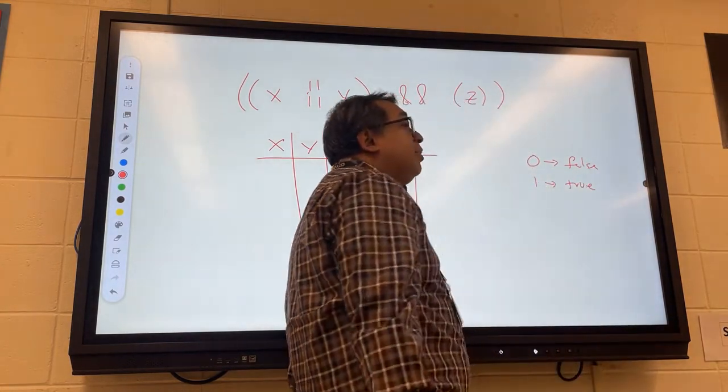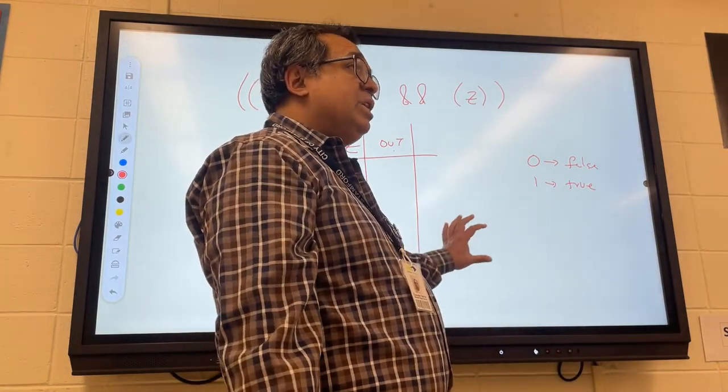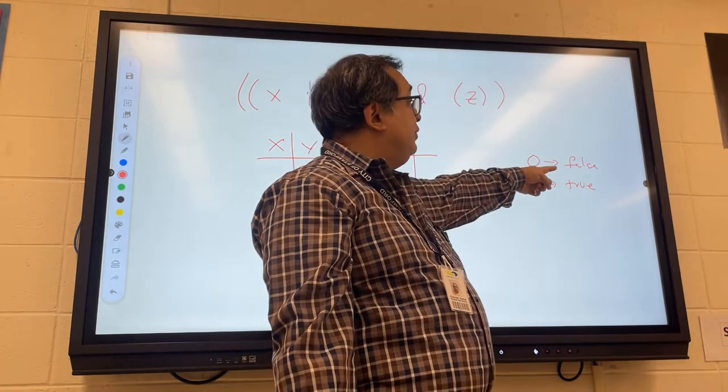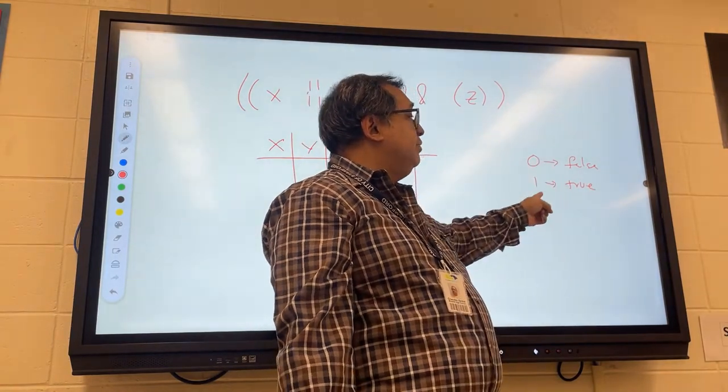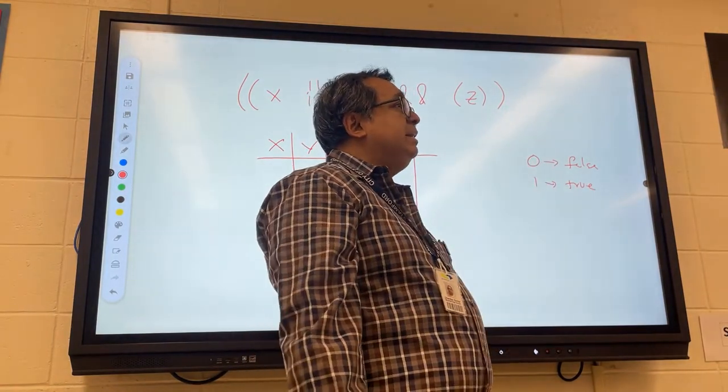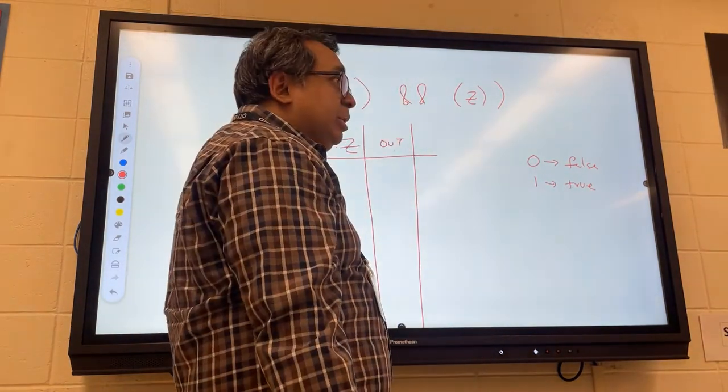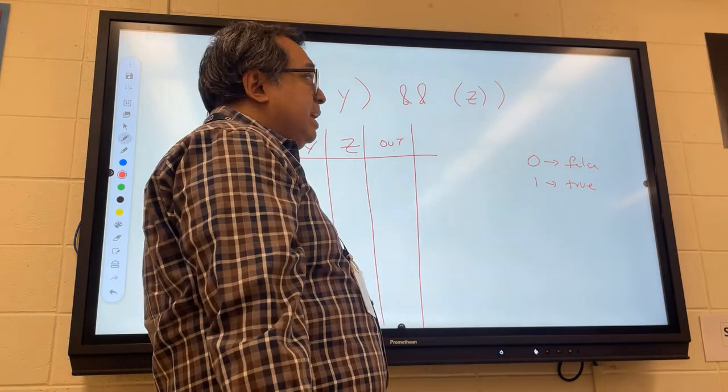So we'll just assume here that zero means false and one means true. In some programming languages like C, which is where Java comes from, this is actually true inside the machine, that false is set to a value of zero and true is set to a value of one. Java is not like that. It will not let you swap between these two. But for our logical purposes, we're going to sort of assume that.